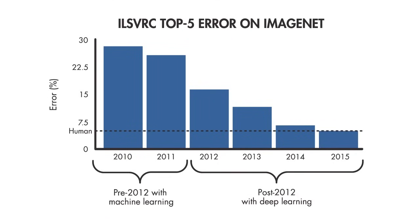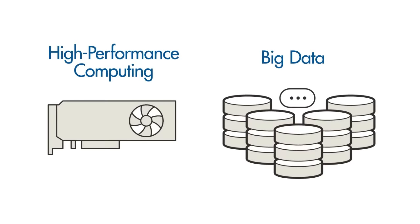First, deep learning methods are now more accurate than people at classifying images. Second, GPUs enable us to now train deep networks in less time. And finally, large amounts of labeled data required for deep learning has become accessible over the last few years.